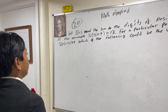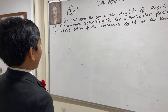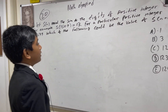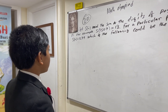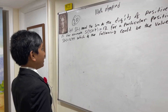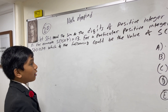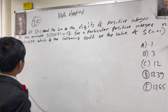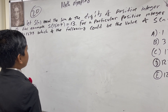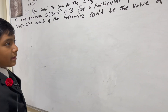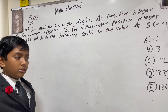AMC 10A 2017 problem number 20. Let s(n) equal the sum of the digits of a positive integer n. For example, s(1507) equals 1 plus 5 plus 7 equals 13. For a particular positive integer n, s(n) equals 1274. Which of the following could be the value of s(n+1)? 1, 3, 12, 39, or 1265.